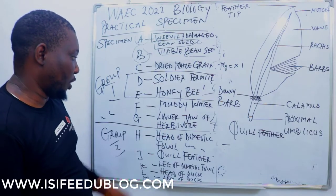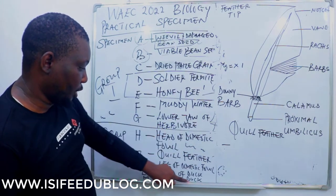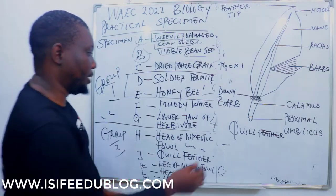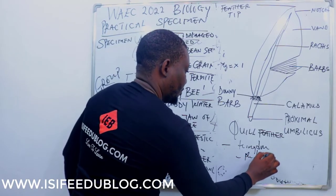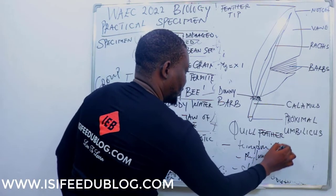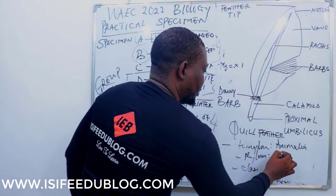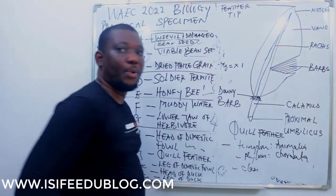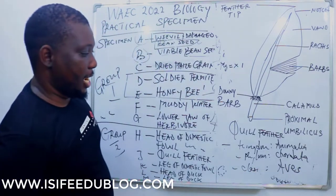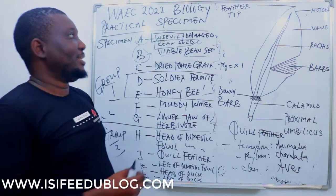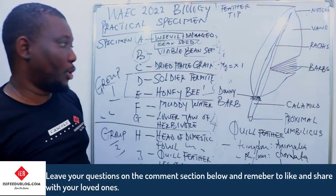Now let's look at the classification of specimen H and G. Organisms with this quill feather are birds. Let's classify this organism: into the kingdom — the organism here belongs to Kingdom Animalia. The phylum is Chordata — animals with a notochord — and animals whose skin is covered with different types of feathers.